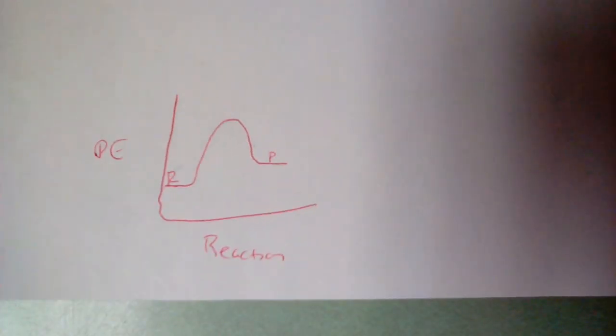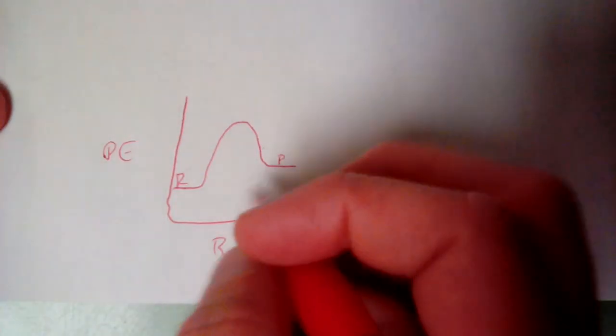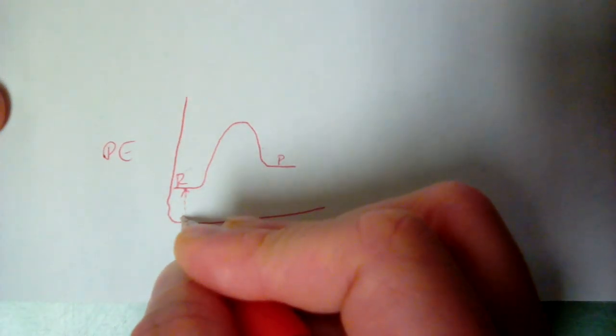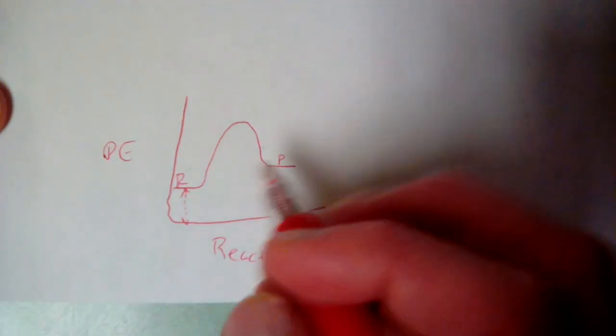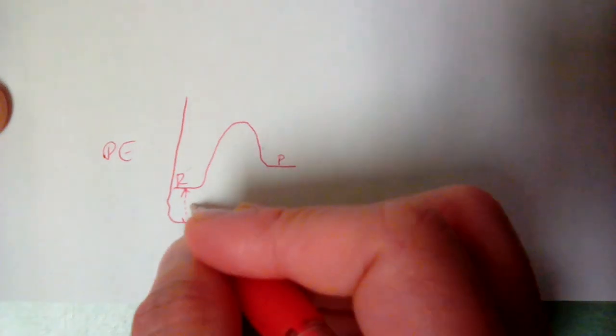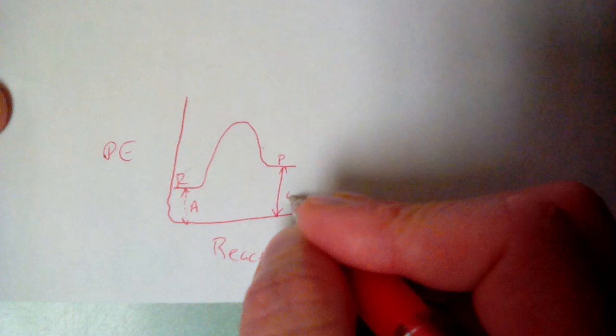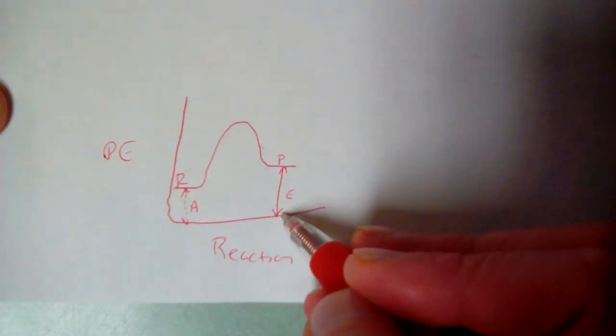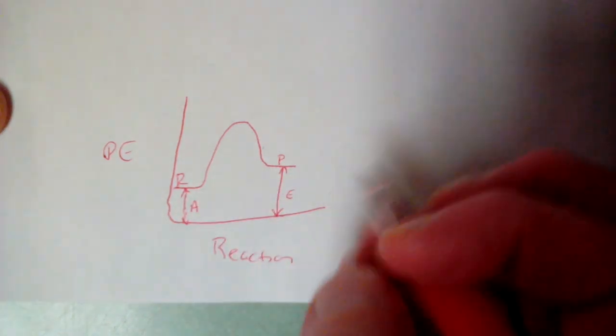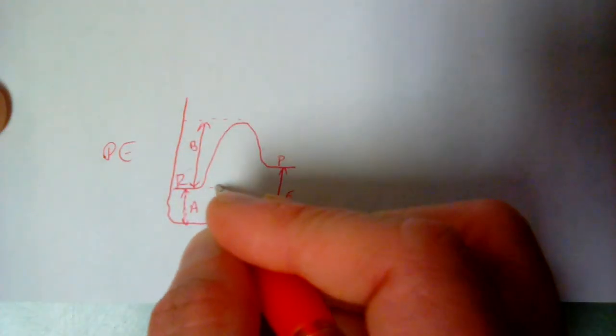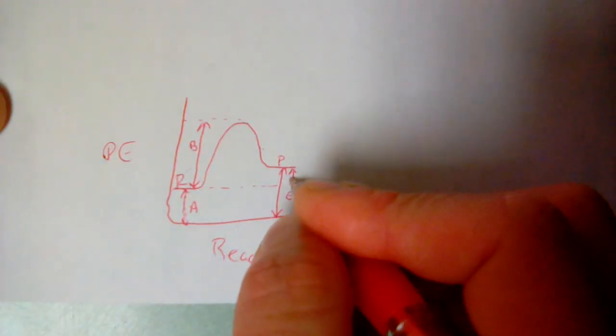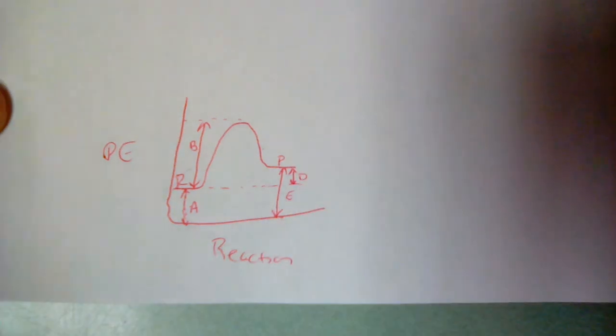Now on the endothermic one, everything's still the same. My reactant energy is still from the x-axis up to where the reactants are. My product energy, which was E in the previous one, is still from the x-axis up to where my products are. My activation energy is still from the reactants to the highest point. That doesn't change at all. And my delta H is still just between my reactants and my products.